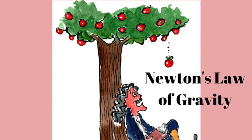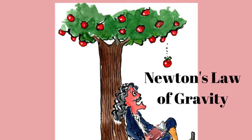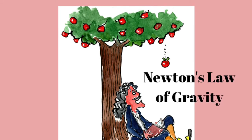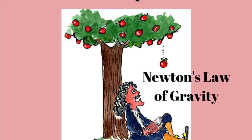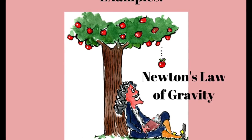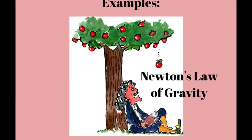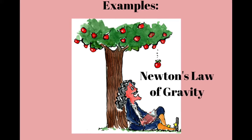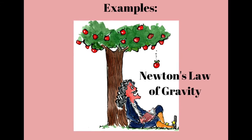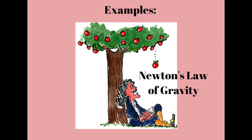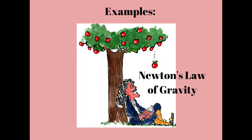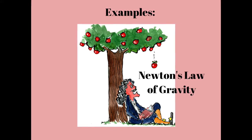An example of a scientific law is Newton's law of gravity. Newton could only use this law to predict the behaviour of a dropped object, but he couldn't explain why it happened.